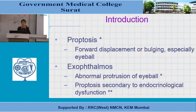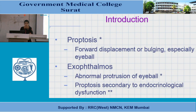Proptosis is forward displacement or bulging of the eyeball. There is another terminology: exophthalmos. Exophthalmos is abnormal protrusion of the eyeball mainly due to endocrine dysfunction, basically related to thyroid. So proptosis is a general term and exophthalmos is specifically due to thyroid abnormality.